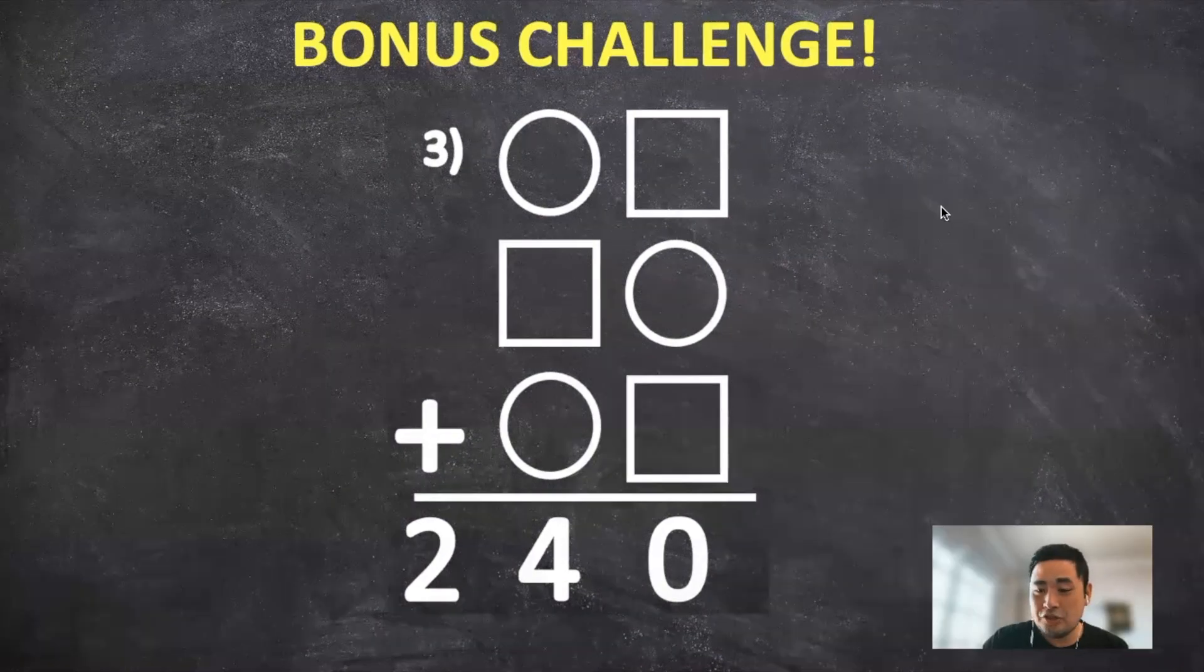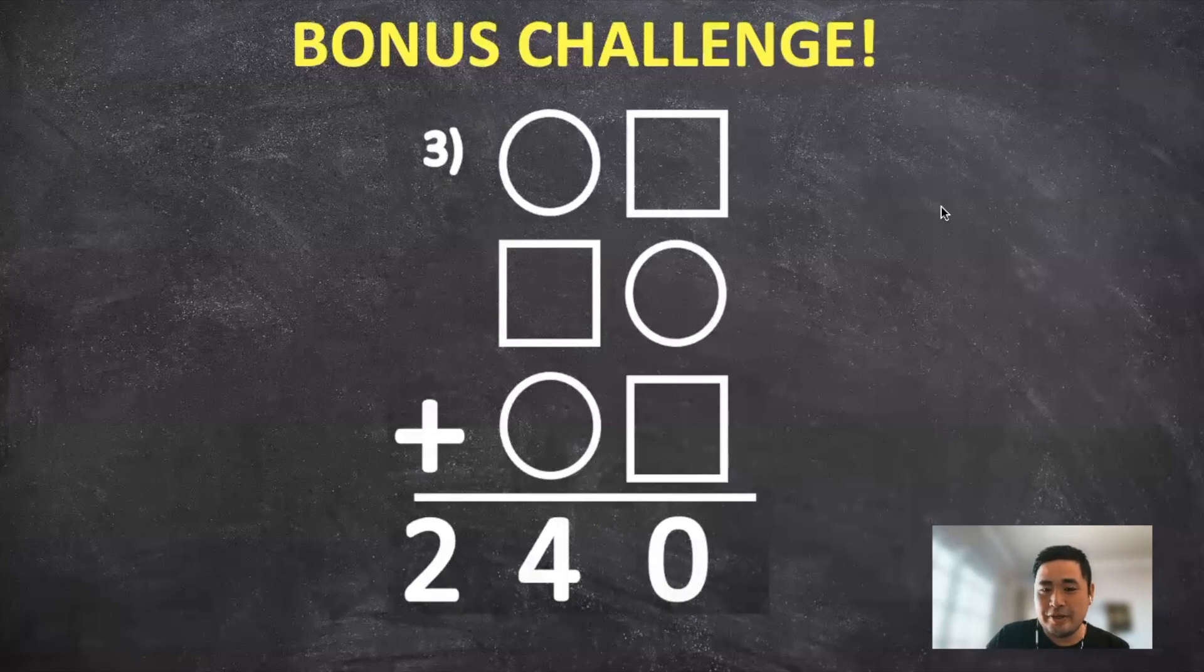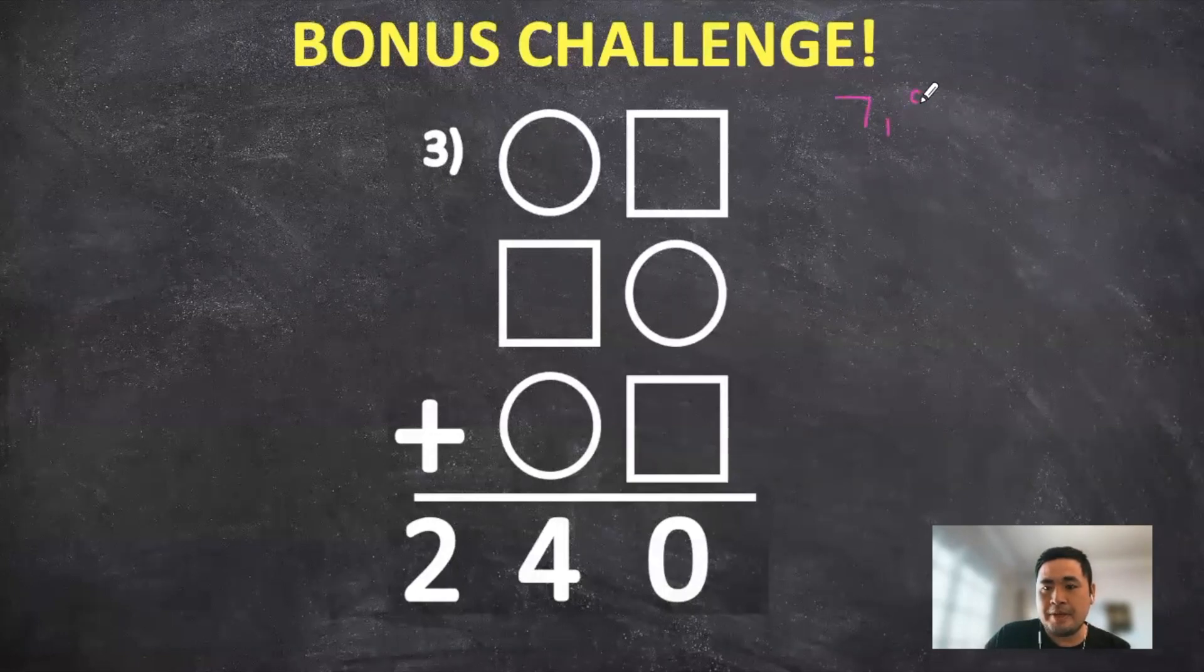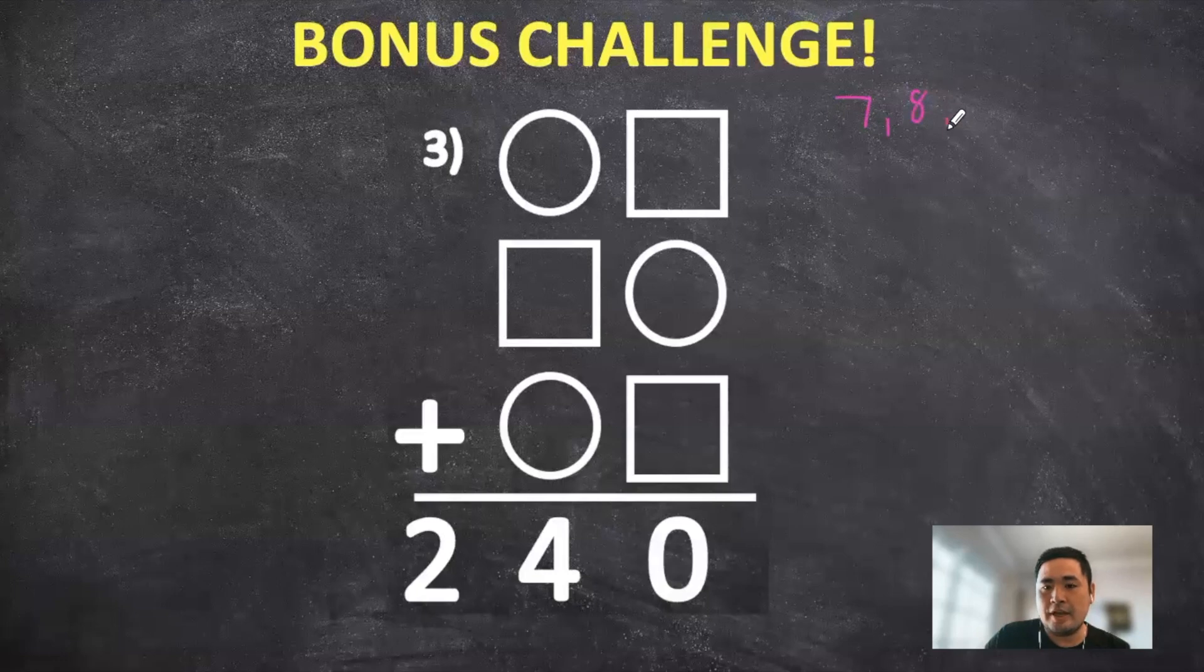Now I think the bonus challenge was the most trickiest in the sense that the squares and circles were sort of alternated with one another. So if you look at it as a whole, we need three numbers that are going to equal 240. So when we think about a number in the circle, we probably don't really want a small number below 5 or 6.